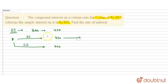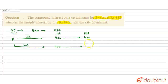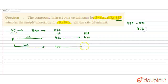अब second year के बाद, simple interest सेम रहता है, लेकिन compound interest पे difference आ जाता है। तो compound interest यहाँ पर 882 है। तो यानि कि 882 minus 420 = 462 रुपीज दूसरे साल का compound interest आया। तो इन दोनों का difference हुआ 42 रुपीज का।